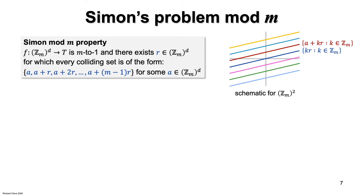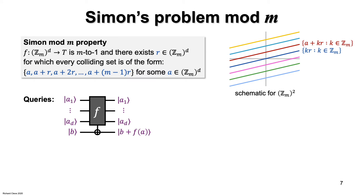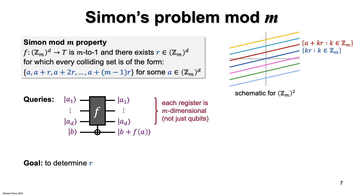For Simon's problem mod m, you're given a black box that computes an unknown function f promised to have the Simon mod m property, and your goal is to determine the parameter r based on queries to f. The query gate is drawn with especially thick lines because the registers contain m-dimensional states for the inputs. The target register, where the output is added, has dimension equal to the size of the set t. Regarding the addition operation, we assume some additive group structure on t, such as modular addition.